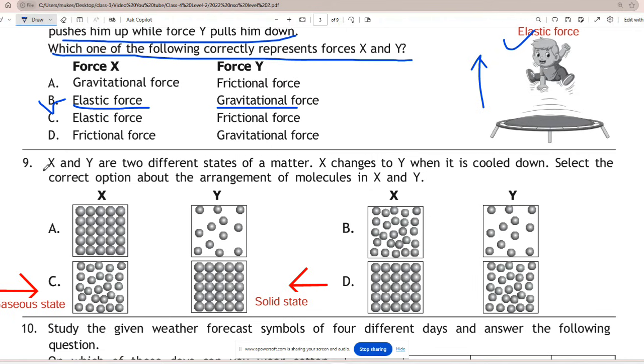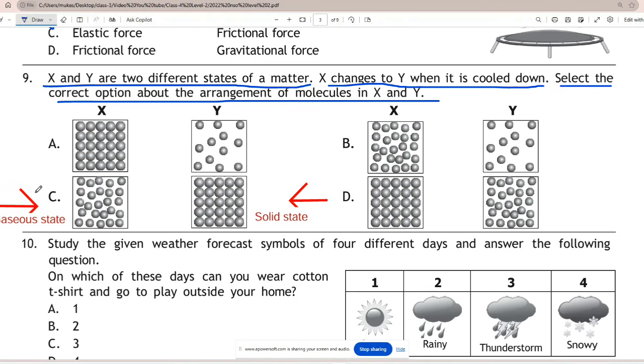Question 9: X and Y are two different states of matter. X changes to Y when it is cooled down. Select the correct option about the arrangement of molecules in X and Y. Correct answer is C. In condensation a gas is cooled and converted to a liquid. X is gaseous state where particles are far apart and move freely, while Y is liquid state where particles are closely packed in a regular arrangement.